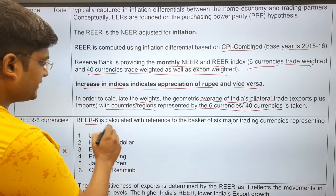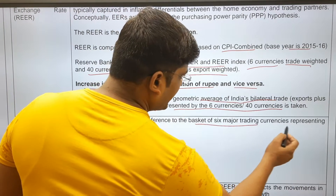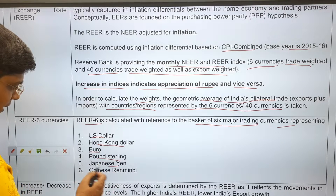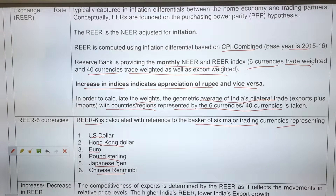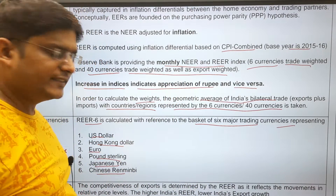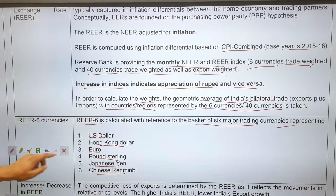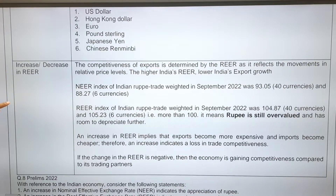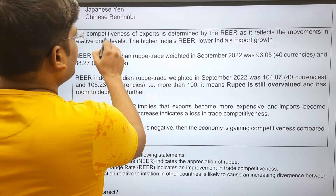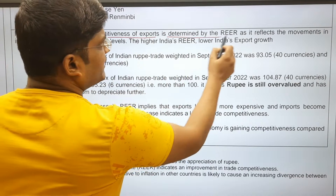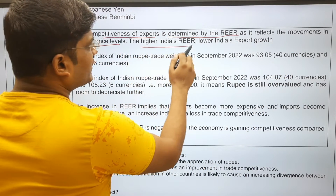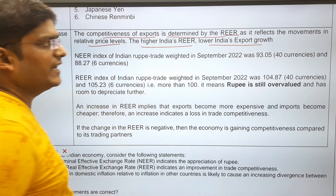The REER 6 is calculated with reference to a basket of 6 major trading currencies representing the US dollar, Hong Kong dollar, euro, pound sterling, Japanese yen, and Chinese renminbi. The 40-currency basket takes the 40 major trading partner currencies. The competitiveness of exports is determined by REER — it reflects the movement in relative price levels. Higher India's REER, lower will be India's export growth, because a higher REER means the Indian currency has appreciated.